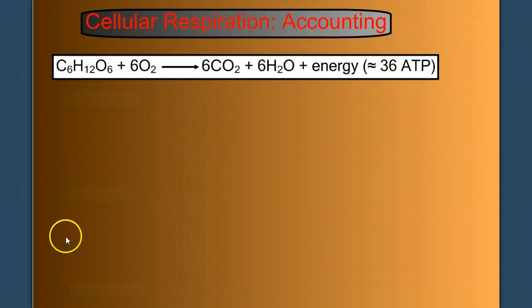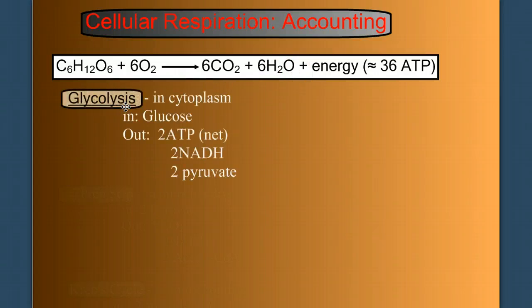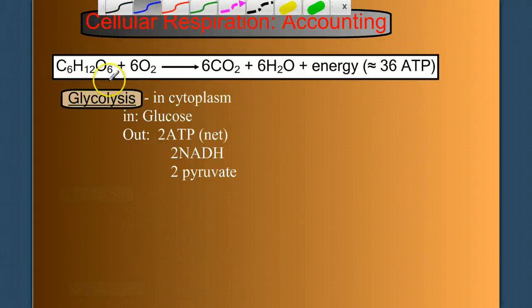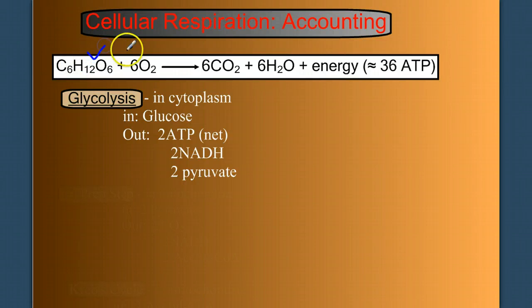Finally, let's finish with a little counting. Here's the overall reaction for respiration. And we've accomplished so far just glycolysis. So let's take into account what we have and have not done yet. So we used glucose, check. We're done with that. We've yet to use oxygen and we've yet to make carbon dioxide and water. But we have made some ATP, but only two. So we have approximately 34 ATP left to make.